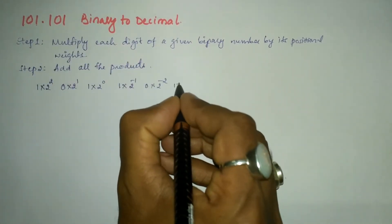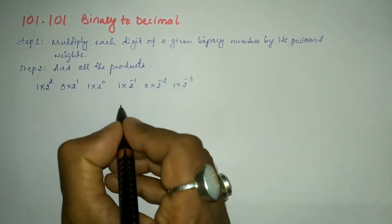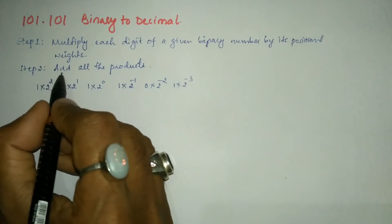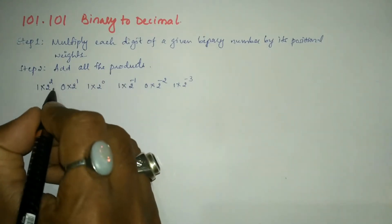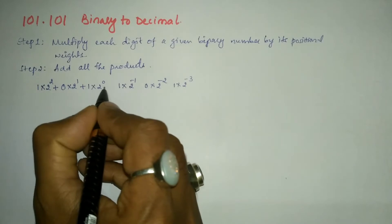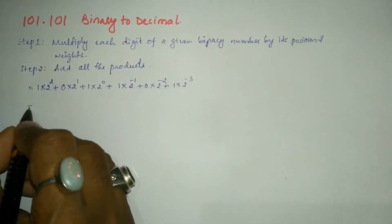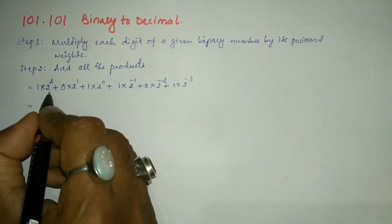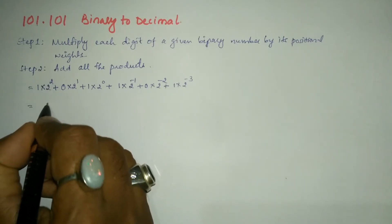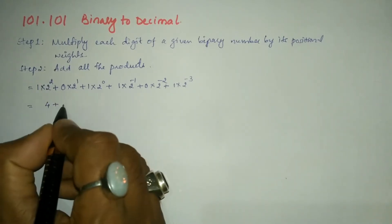Now the second step says add all the products. So all these products are to be added, in between I am going to write plus signs. Next, we are going to simplify. 2² is 4, 4×1 is 4.